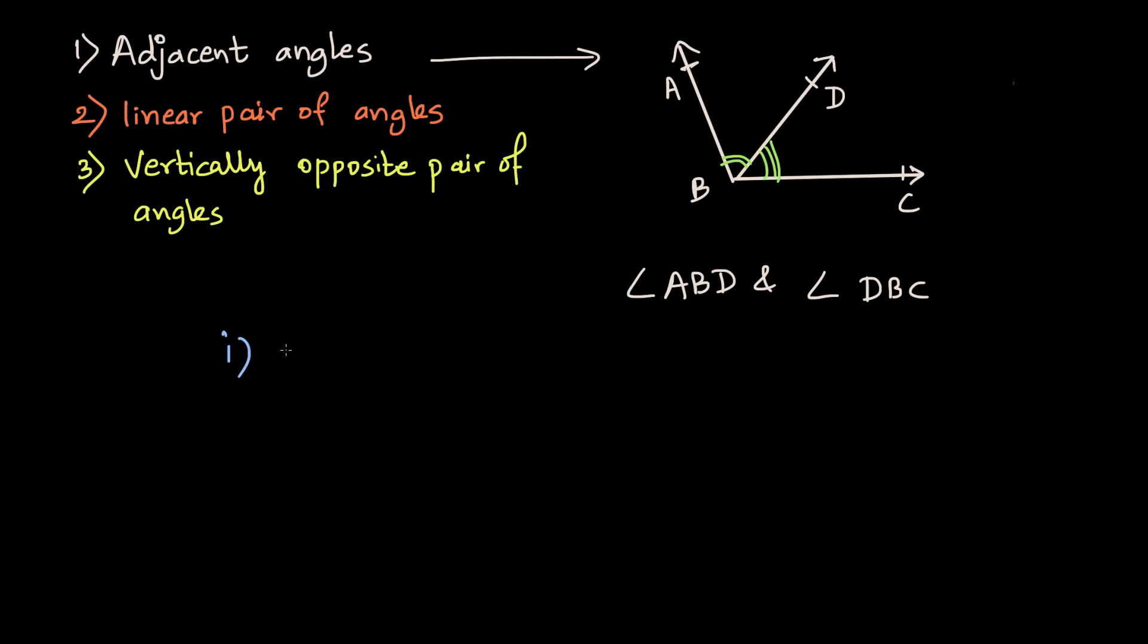The first thing for adjacent angles is that they need to have a common vertex. Do angles ABD and angle DBC have a common vertex? Yes. The common vertex is B.